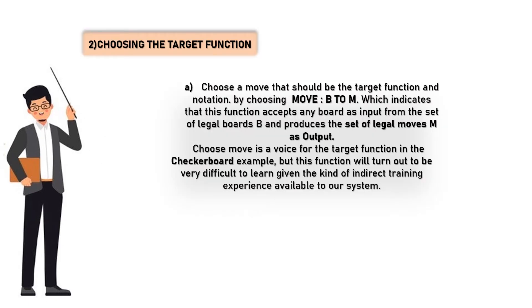Two: choosing the target function. In this, choose a move that should be the target function in notation by choosing move B to M, which indicates that this function accepts any board as input from the set of legal boards B and produces the set of legal moves M as output. Choose move as a choice for the target function in the checkerboard example, but this function will turn out to be very difficult to learn given the kind of indirect training experience available to our system.